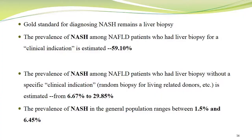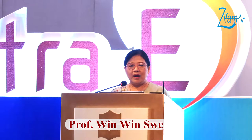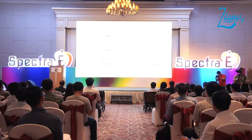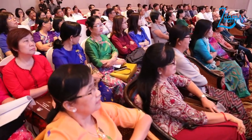The question of diagnosis of NASH remains a liver biopsy. The prevalence of NASH among NAFLD patients who had liver biopsy for a clinical indication is estimated at 59.1%. The prevalence among NAFLD patients who had liver biopsy without a specific clinical indication — such as biopsy for a living related donor — is estimated from 6.67% to 29.85%. The prevalence of NASH in the general population ranges between 1.3% to 6.45%.